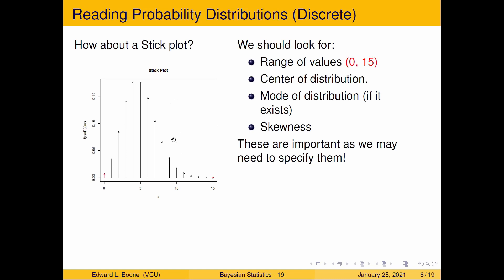So if I had something like this, I would be looking to describe it: what's the range of values? From here, 0 to 15. And then I'd be interested in the center — I'm going to guess it's maybe 5 or 6, so I'm going to put down 5. The mode of the distribution, which is the highest point — and it says 'if it exists,' because sometimes they don't exist in a unique sense. This is a case where it's not unique. It looks like 4 and 5 are exactly the same height, and they are. So we put down 4 and 5.